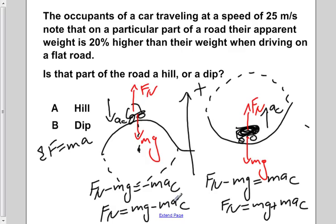But in this case, we're subtracting the mass times the centripetal acceleration. So we're actually decreasing the normal force in case one. So in case one, when we're on the hill, we're decreasing our apparent weight.